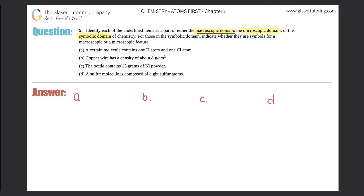The macroscopic domain is anything we can see with our naked eyes — literally things we can see, like a computer, a calculator, or a coffee cup. The microscopic domain is stuff we cannot see but know exists: atoms, molecules, bacteria, viruses — things from science we know about but can't see. The symbolic domain is those symbols on the periodic table that represent elements or compounds, like O for oxygen, C for carbon, or F for fluorine.